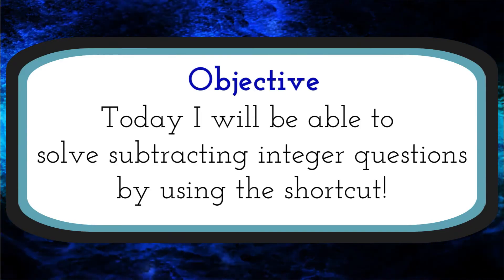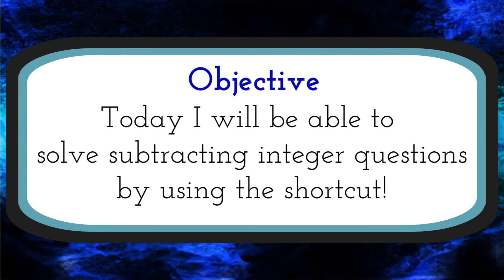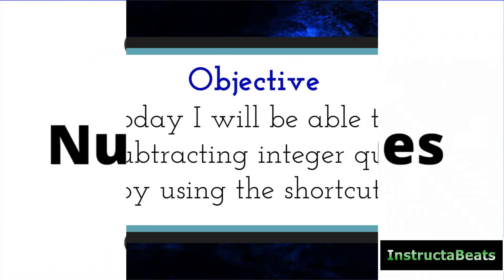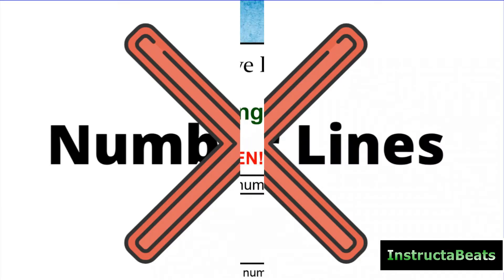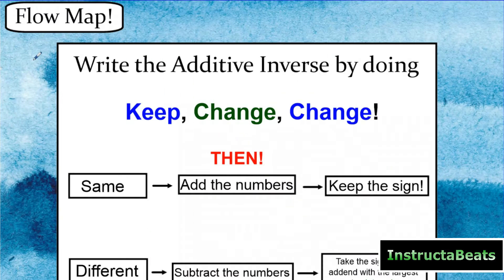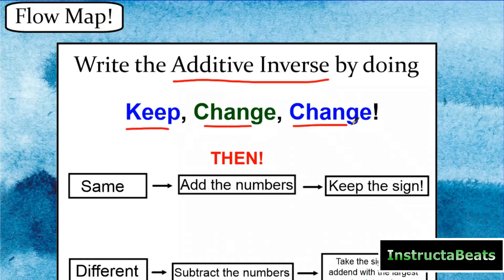If you've been with us since the beginning, we appreciate you. You've been doing a lot of number lines, but this means no more number lines. So you are welcome. Let's dive right in and check out our steps for our shortcut. When you are subtracting integers, the first thing you're going to do is write the additive inverse by doing these three steps. Keep change change is going to help you rewrite a subtraction problem with its additive inverse.